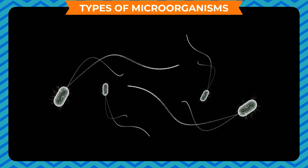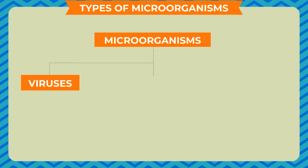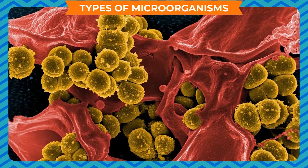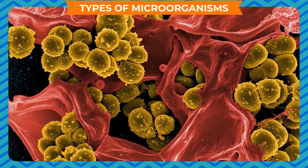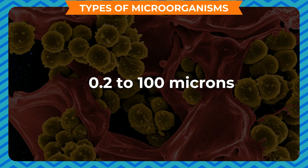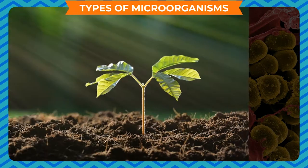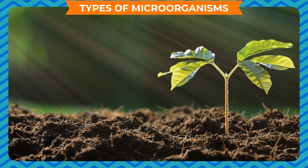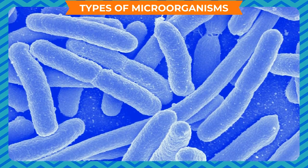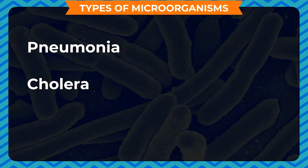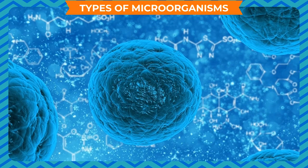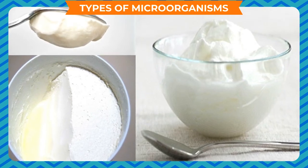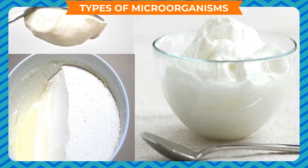Microorganisms can be classified into five major groups: viruses, fungi, bacteria, algae, and protozoa. Bacteria are single-celled unicellular organisms measuring between 0.2 to 100 microns. Nearly 2.5 billion bacteria are present in one gram of garden soil. Each bacterial cell exists uniquely but sometimes clings together to form long chains. Some bacteria are harmful and cause diseases like pneumonia, cholera, and diphtheria, while others are useful — for example, the changing of milk into curd is a bacterial activity.